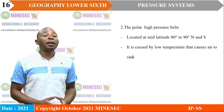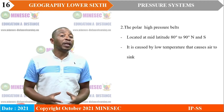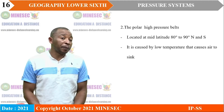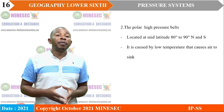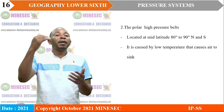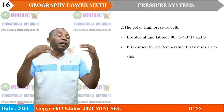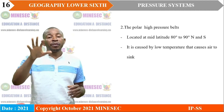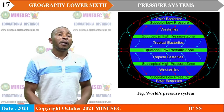We also have the polar pressure belt, located between latitude 80° to 90° north and south of the equator. Here, low temperatures cause the air to become very cold, making it heavier so it sinks, bringing about the existence of high pressure in this region.